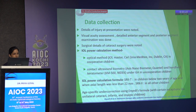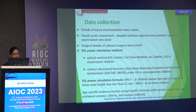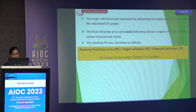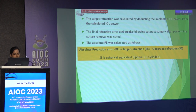IOL power calculation used optical method in cooperative children, and contact ultrasound biometry with handheld keratometer under general anesthesia for non-cooperative children. SRKT formula was used for children under 2 years of age or with axial length less than 22 mm; SRK2 was used for the rest. Age-specific undercorrection using NID's formula was done. Target refraction was calculated by deducting implanted IOL power from calculated IOL power. Final refractive error was measured at 6 weeks post-cataract surgery after suture removal. Absolute prediction error was defined as target refraction minus observed refraction.